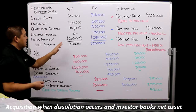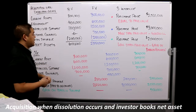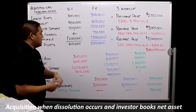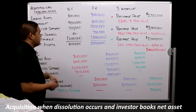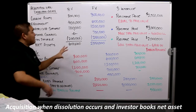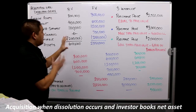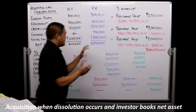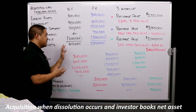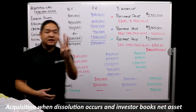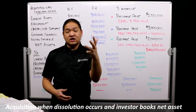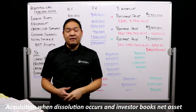Notes payable is $200,000 on the books, but the present value of those payments should really be $250,000. So this company technically is worth $2.55 million in fair value terms, not $600,000.